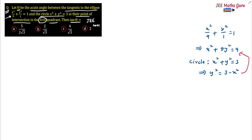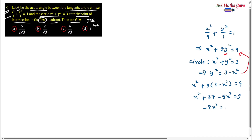I will substitute the value of y² into the equation of the ellipse: x² + 9(3 - x²) = 9, so x² + 27 - 9x² = 9, giving -8x² = -18, and therefore x² = 9/4.